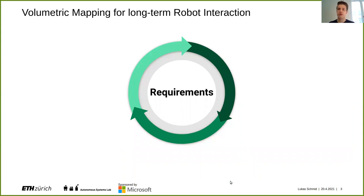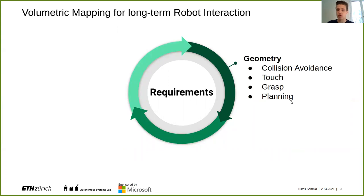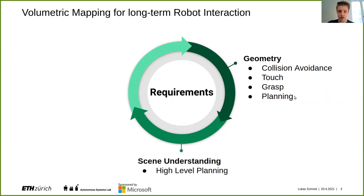What are the requirements for such a system? On one hand, since we want to do interaction, it needs to accurately capture the geometry and shape of the agent's surroundings. This is relevant for tasks such as collision avoidance and physical or virtual manipulation tasks such as touch or grasping. We would also want a representation of free space for planning. A second crucial component for the intelligent part is to have some sort of scene understanding for higher-level tasks and planning.